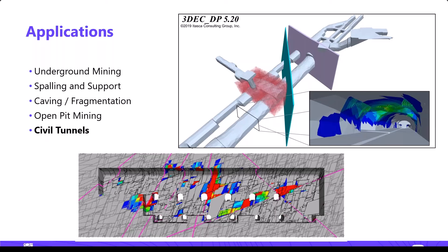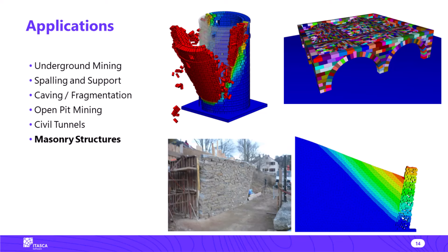For civil engineering, the top right plot shows subway tunnels in Sweden. The red area is a fractured zone where they're interested in the details at tunnel intersections. The bottom plot is a large power cavern in China — a large excavation with smaller excavations shooting off from it, in a very fractured rock mass. For masonry structures, examples include a stone vault, a brick or stone tower subjected to earthquake loading, and a stone wall with earth pressure behind it.